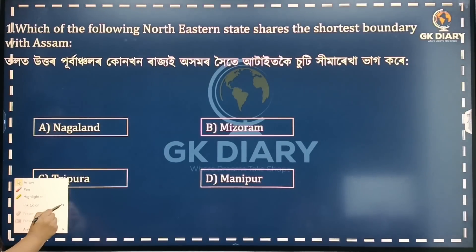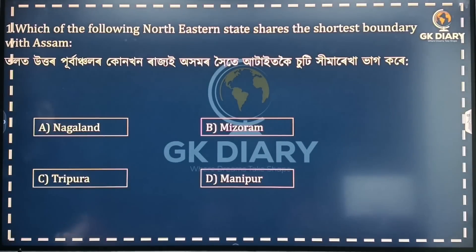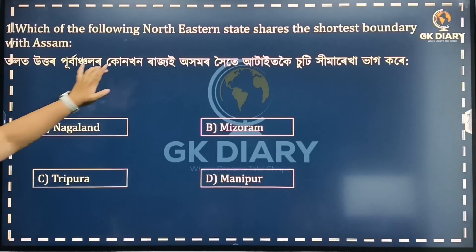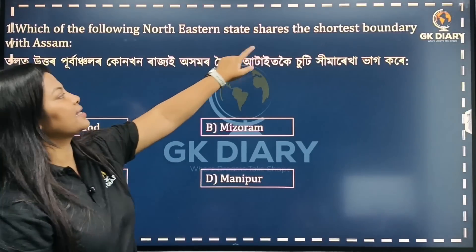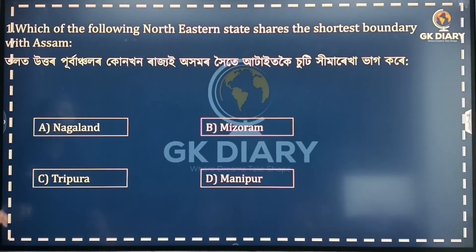Okay, so first question: which of the following North Eastern states shares the shortest boundary with Assam?